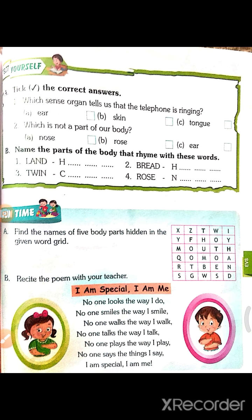Next question: take the correct answer. Which sense organ tells you that the telephone is ringing? Yes, it is correct — the ear. Next: which of these is not a part of our body — nose, rose, or ear? Rose is a flower; it is not a part of our body, so the answer is rose.